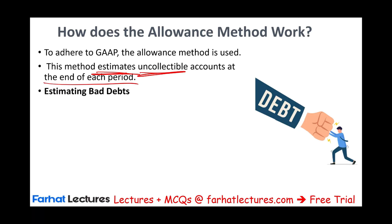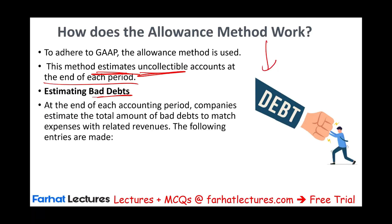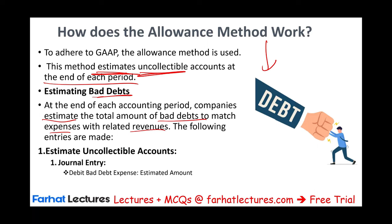At the end of each period, we estimate how much we are not going to collect. We estimate bad debt, so at the end of each accounting period, companies estimate the total amount of bad debt to match it with expenses related to that period's revenue. They make the following entry: debit bad debt expense, credit allowance for doubtful accounts — or allowance for bad debt for short. Whether we say doubtful accounts or bad debt, it's the same thing. This allowance account is a contra receivable — a new type of account.